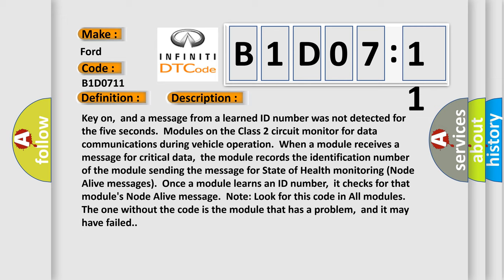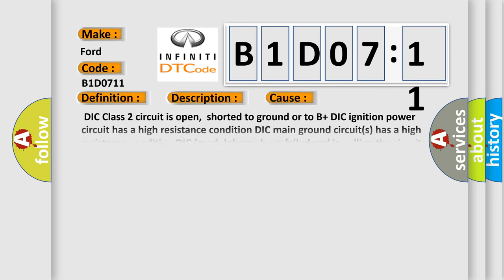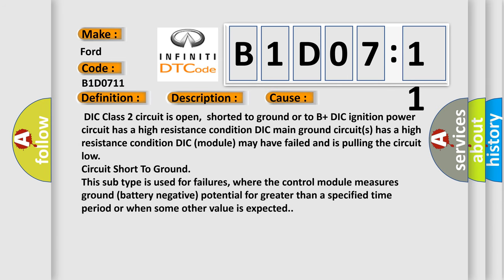This diagnostic error occurs most often in these cases. DIC Class 2 circuit is open, shorter to ground or to B plus DIC ignition. Power circuit has a high resistance condition. DIC main ground circuits has a high resistance condition. DIC module may have failed and is pulling the circuit low circuit short to ground. This subtype is used for failures where the control module measures ground battery negative potential for greater than a specified time period or when some other value is expected.